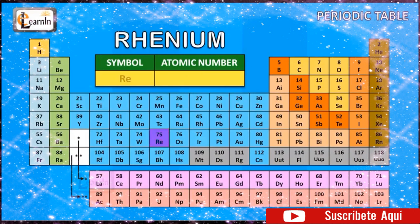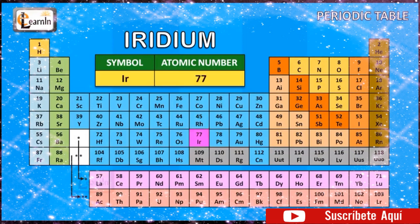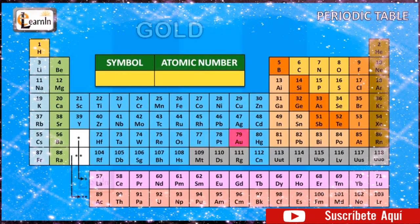The element rhenium is represented as Re and has an atomic number of 75. The element osmium is represented as Os and has an atomic number of 76. The element iridium is represented as Ir and has an atomic number of 77. The element platinum is represented as Pt and has an atomic number of 78. The element gold is represented as Au and has an atomic number of 79.